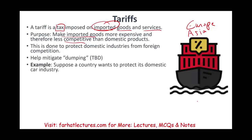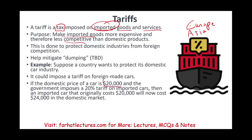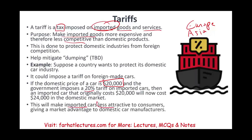Suppose a country wants to protect its domestic car industry — for example, the US wants to protect Ford and GM. It could impose a tariff on foreign-made cars, telling Europeans they can bring their cars but with a 20 or 30 percent tariff imposed on them. Bear in mind, Europe is going to turn around and impose a tariff on the US, so tariffs don't really work well for international trade. If the domestic price of a car is $20,000 and the government imposes a 20 percent tariff on imported cars, then an imported car that originally cost $20,000 would now cost $24,000, making BMWs more expensive than GM cars and giving a market advantage to domestic car manufacturers.